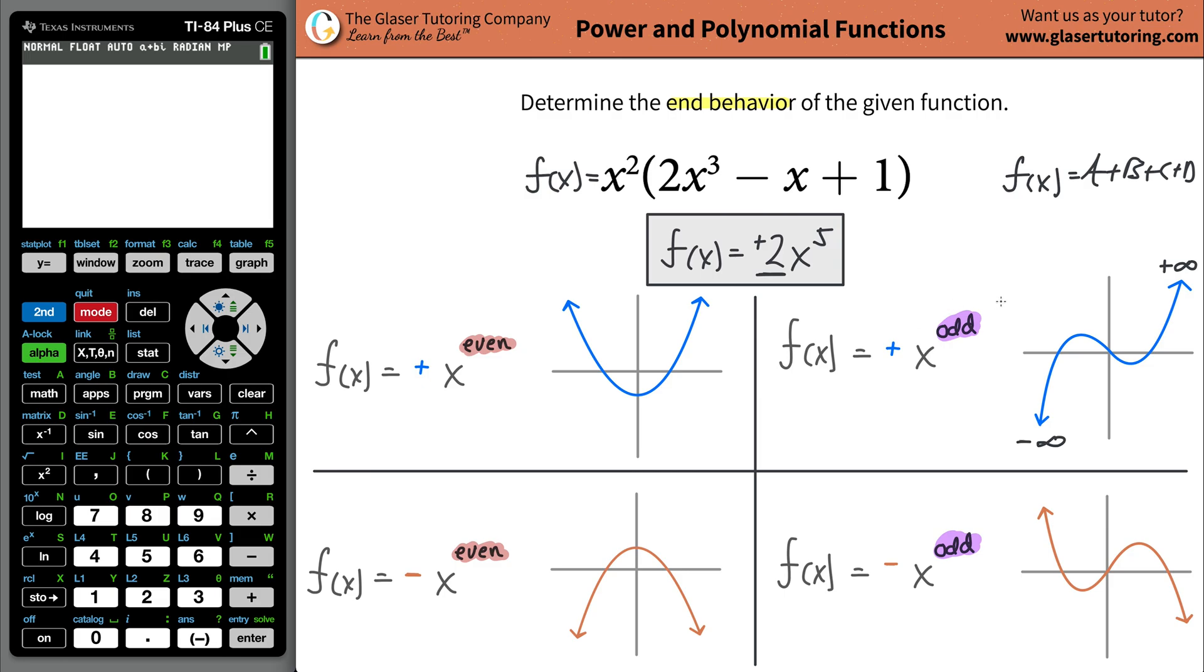Now, that's basically the answer to the question when it says to determine the end behavior. In other words, when x approaches then negative infinity, as it moves out further and further to the left, what happens to the function's value? The function's value then approaches negative infinity. Conversely, as x approaches now positive infinity, as x approaches positive infinity to the right, the y value is also approaching positive infinity. And that would kind of be the answer. That's the end behavior.